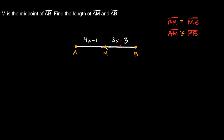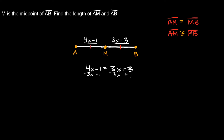Since the midpoint splits AB into two equal pieces, we set the two expressions equal: 4X minus 1 equals 3X plus 3. Let's get all the X's on one side — subtract 3X from both sides — then add 1 to both sides to move the constants. The 3X's cancel out and the negative 1 and plus 1 cancel out, leaving us with 4X minus 3X equals 3 plus 1, so X equals 4.